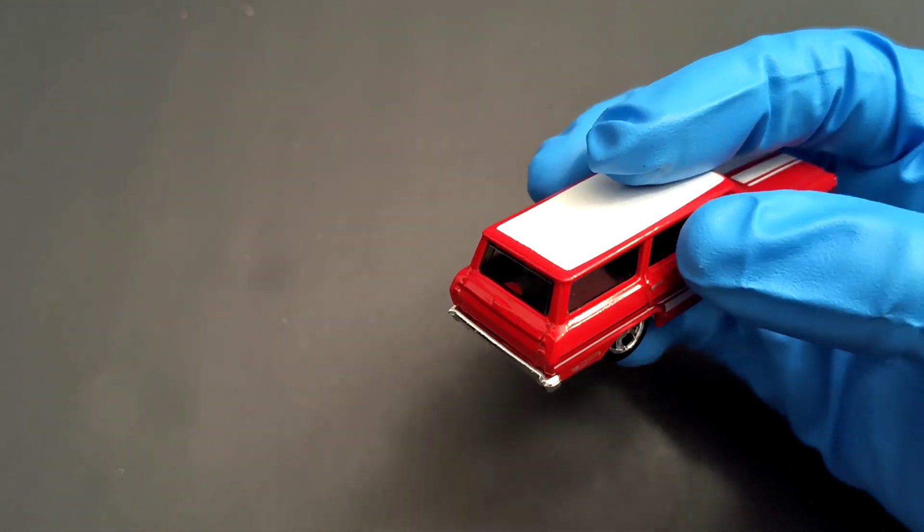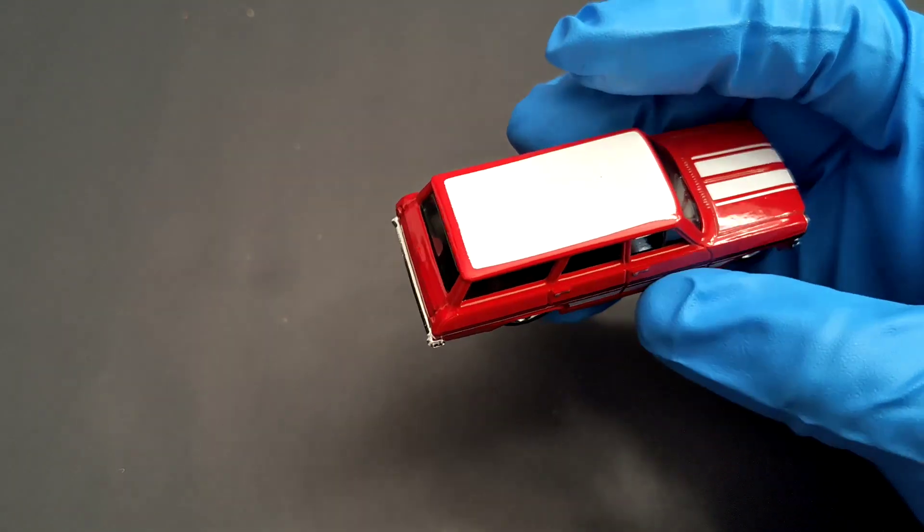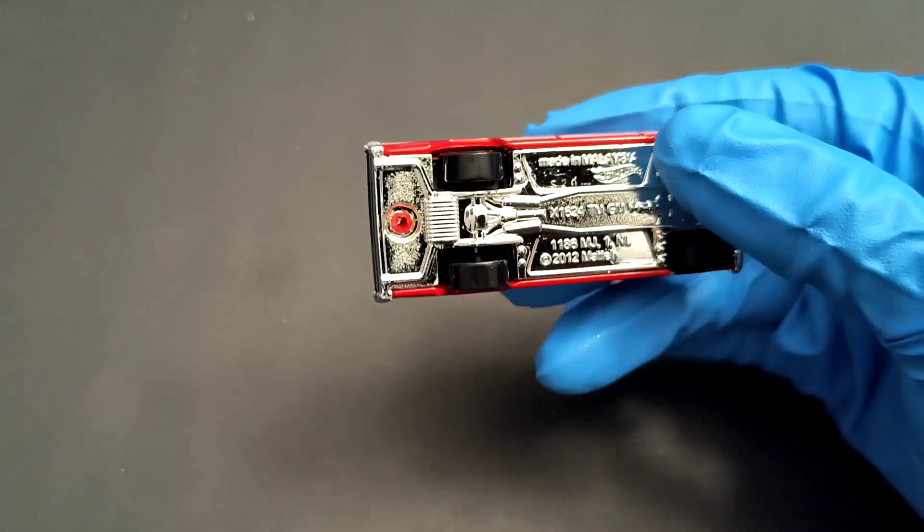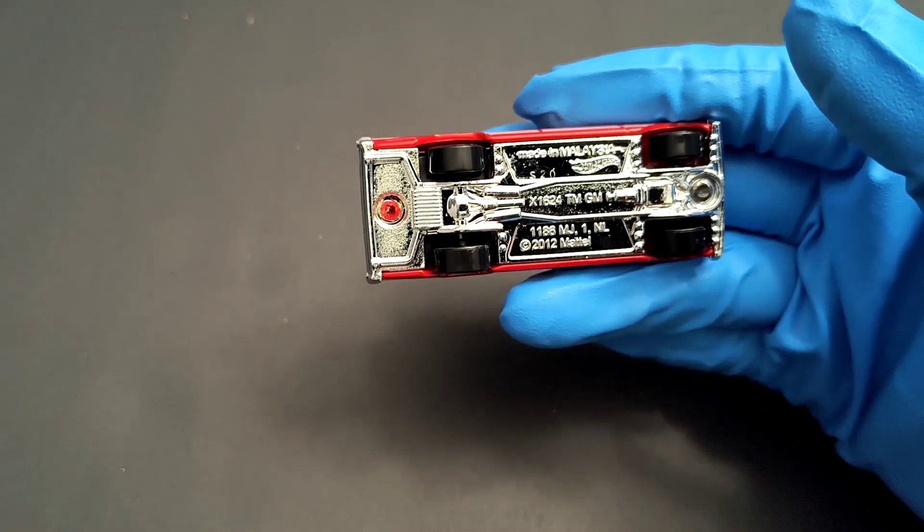The interior is done in black. There's no glass in the front two windows but the rear has a glass and no roof vents, white roof, and again chrome base. This is Hot Wheels from the bottom.